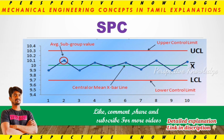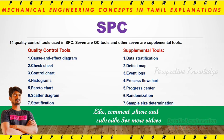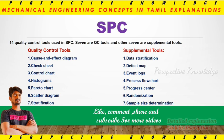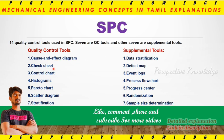This is the Statistical Process Control chart. In SPC, 14 quality control tools are used, of which 7 QC tools are: cause and effect diagram, check sheet, control chart, histogram, Pareto chart, scatter diagram, and stratification.